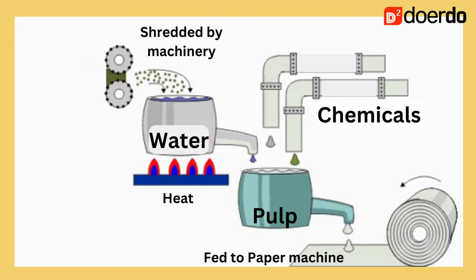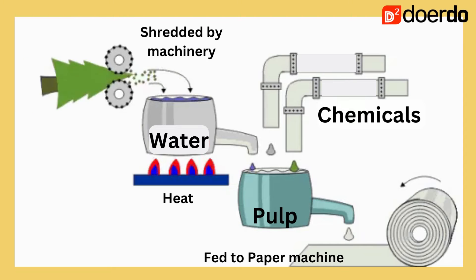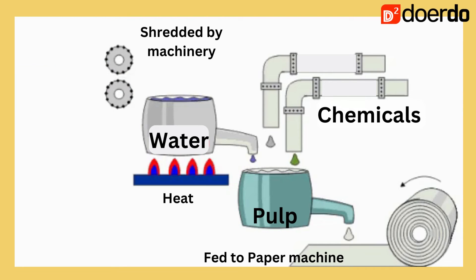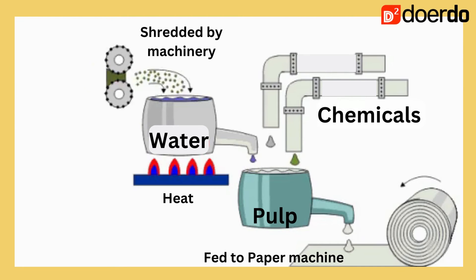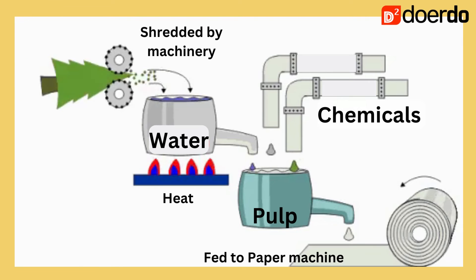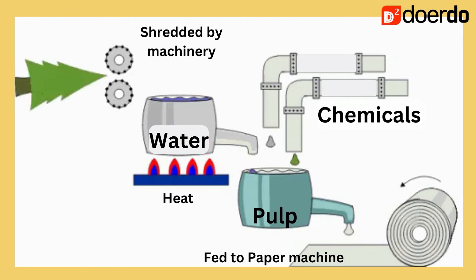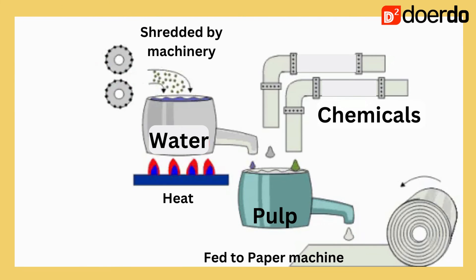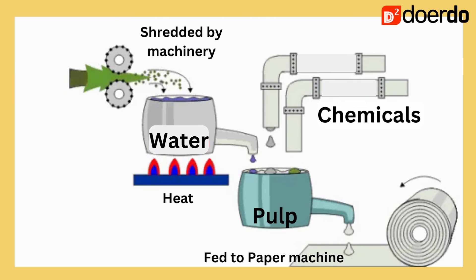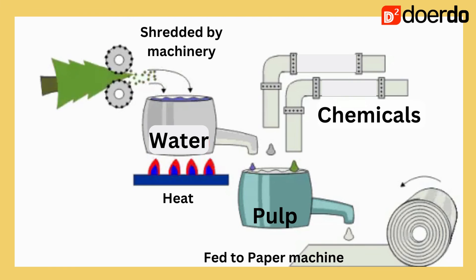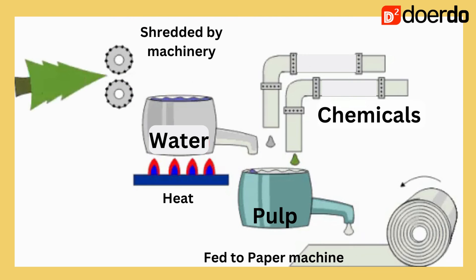To make paper from wood, the tree's bark is stripped and shredded by machinery before being mixed with water and chemicals to form a pulp or paste. Pulp is mixed with water and fed into a paper machine where it is flattened, dried, and cut into sheets and rolls.